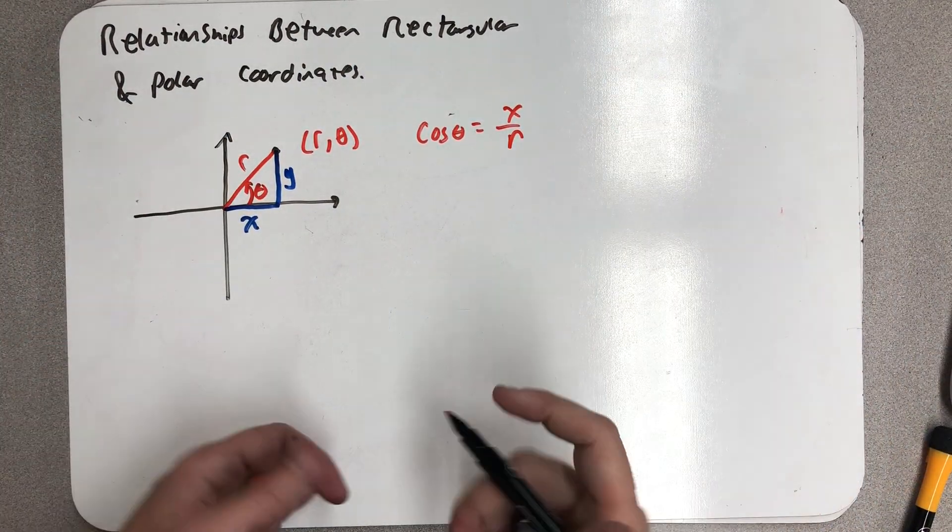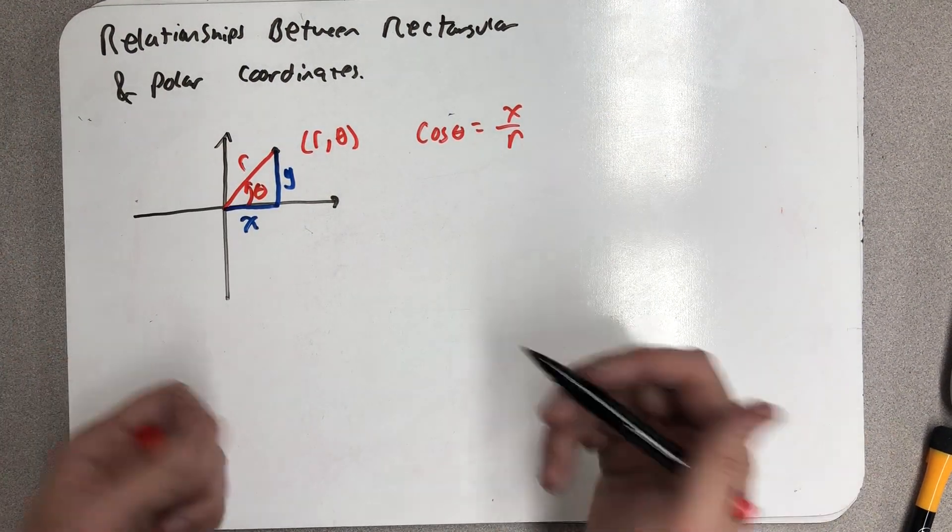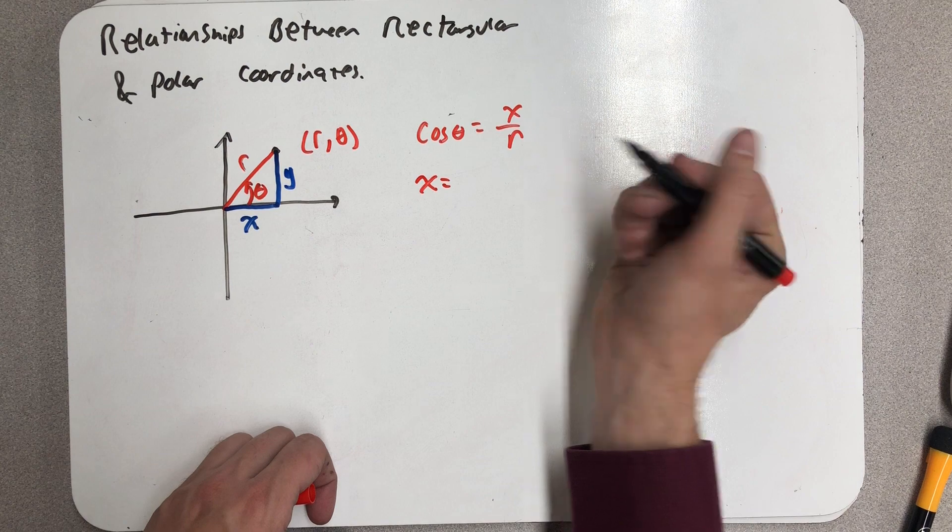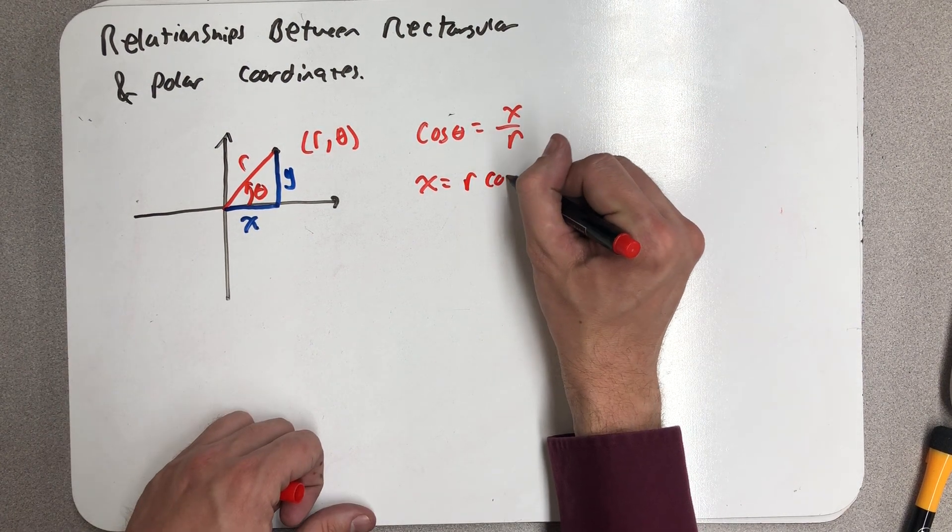I look at that and say that's just the definition of cosine, so I don't even need to worry about being in the first quadrant because that's what cosine is. Solving for x tells me that x equals r cosine θ.